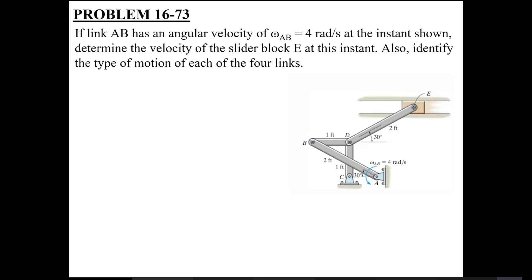Moving on to today's lecture. This was the problem we discussed yesterday as well, although we didn't complete the solution. We only discussed the brief outline of what type of motions various links in this rigid body mechanism are undergoing. So for a quick review, we showed a rigid body mechanism where link AB is rotating in a counterclockwise direction with a speed of 4 radians per second. You need to identify which type of motion each link is undergoing and then find the velocity of the piston, slider, or collar E at the instant shown.